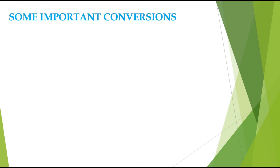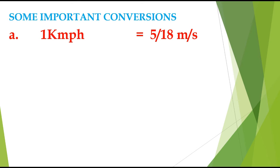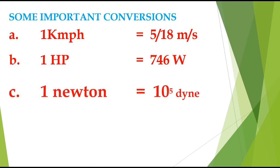Next let us see some important conversions. It is sometimes necessary to convert SI units into CGS or MKS systems and vice versa. 1 km/h equals 5/18 m/s. 1 horsepower (HP) equals 746 watts. 1 Newton equals 10⁵ dyne — Newton is the MKS unit of force and dyne is the CGS unit of force.